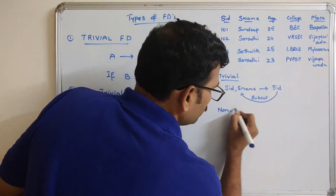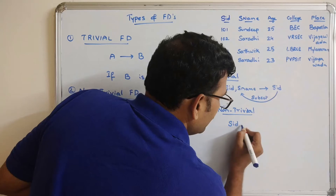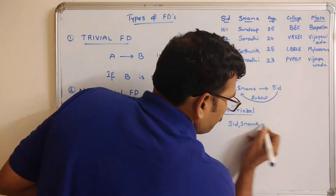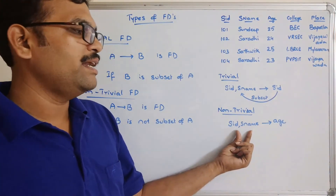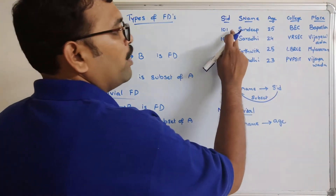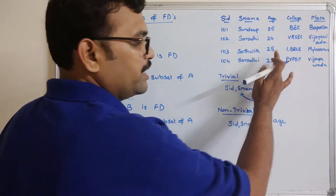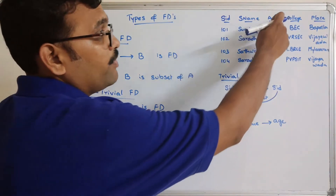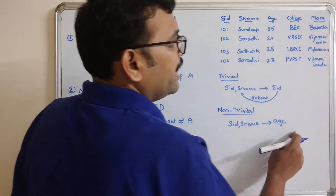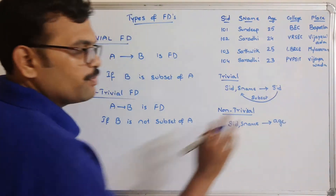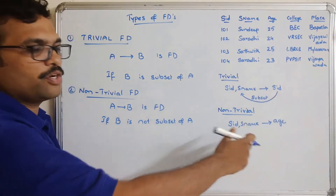Coming to the non-trivial example: SID and Sname together can determine Age. Age is functionally dependent on the combination of SID and Sname. You can observe: 101 Sandeep gives 25, 102 Saradi 24, 103 Saradi 25, 104 Saradi 23 — there is no redundancy, and we can get Age. Or simply Age and College together — these dependents are not a subset of the determinants.